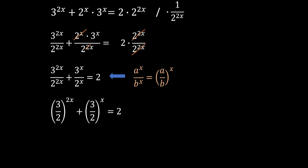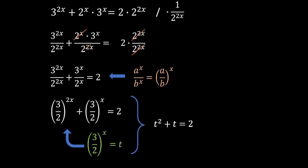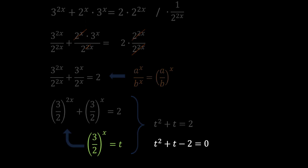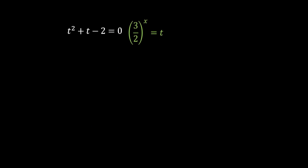We can say that 3 over 2 to the power of x is equal to t, and substituting that into our equation we get t squared plus t equals 2. Rewriting this gives us t squared plus t minus 2 equals 0, and of course this is a quadratic equation.